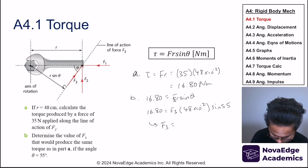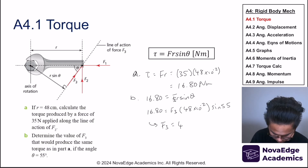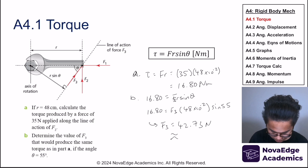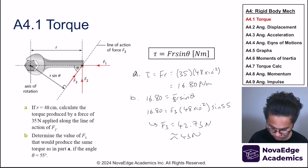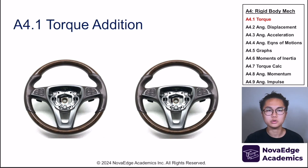Isolating F3, we get F3 equals 42.73 newtons. Correct to two significant figures, that is 43 newtons.